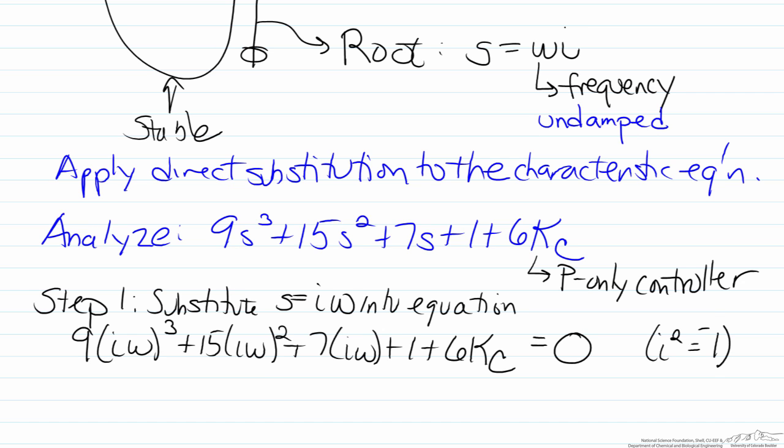So therefore when we multiply this out we'll have 9i cubed omega cubed, which we'll instead write here as negative 9 times i times omega cubed. For the second term we'll have 15i squared omega squared, the i squared will be negative one, so this will become negative 15 times omega squared. And then we'll add 7i omega, which hasn't changed itself, 1 plus 6kc equals zero.